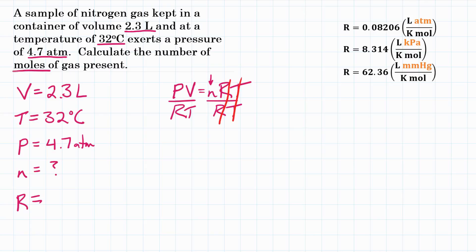Now let's plug in everything we know on the left side. So P is 4.7 atmospheres, and we're going to multiply that by V, 2.3 liters. And that is going to be all over RT.